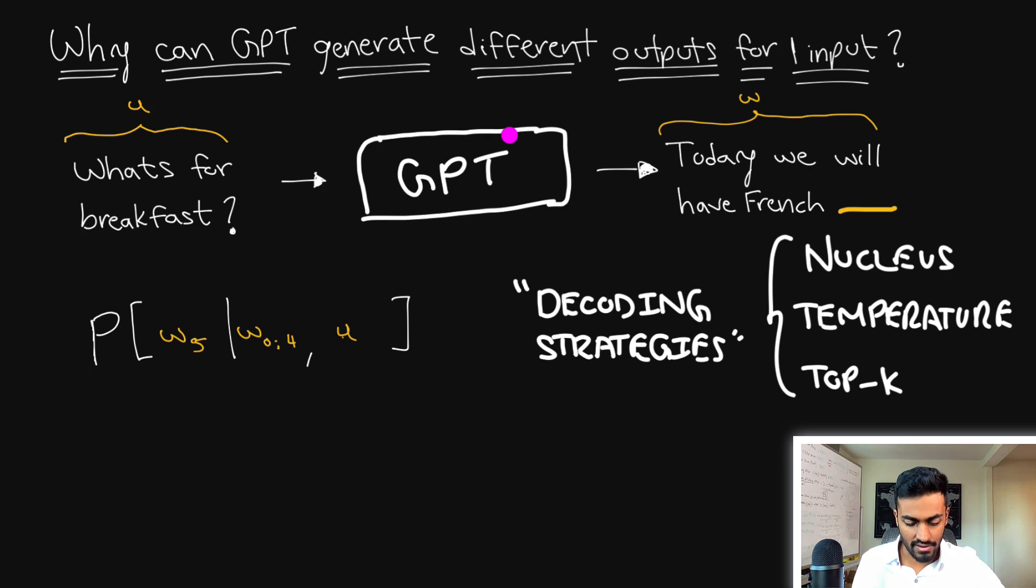When we pass in the input context 'what's for breakfast' to a GPT model, GPT will now go through a decoding strategy, and this decoding strategy will determine what word we generate. There are many kinds of decoding strategies - there's nucleus sampling, temperature sampling, there's top-k sampling - where the main goal here is not just to take the top word, but to sample from some top few distribution words to generate this next word, giving it some element of stochasticity.